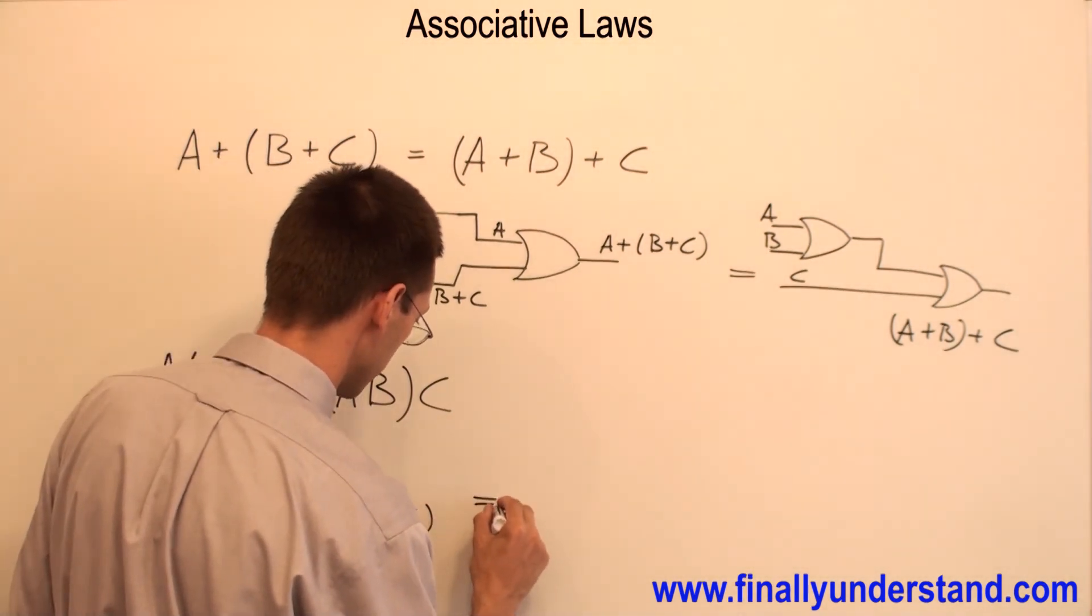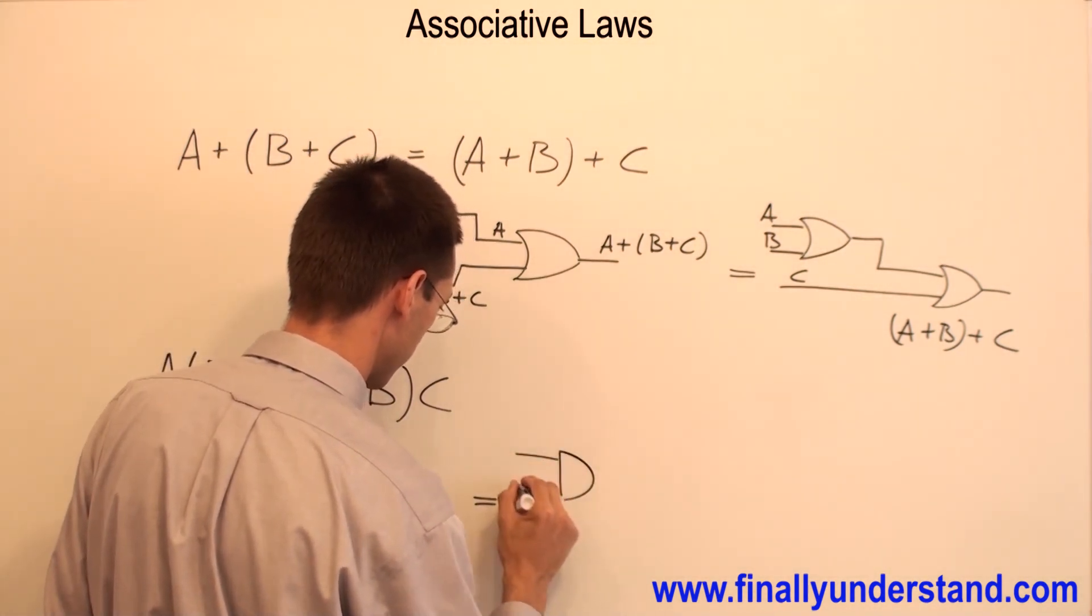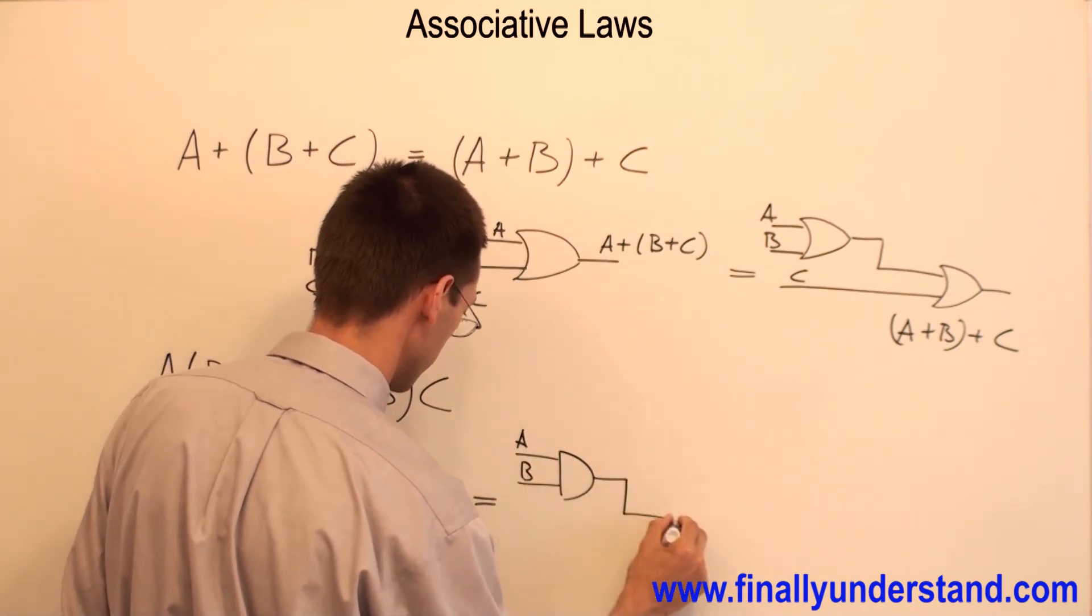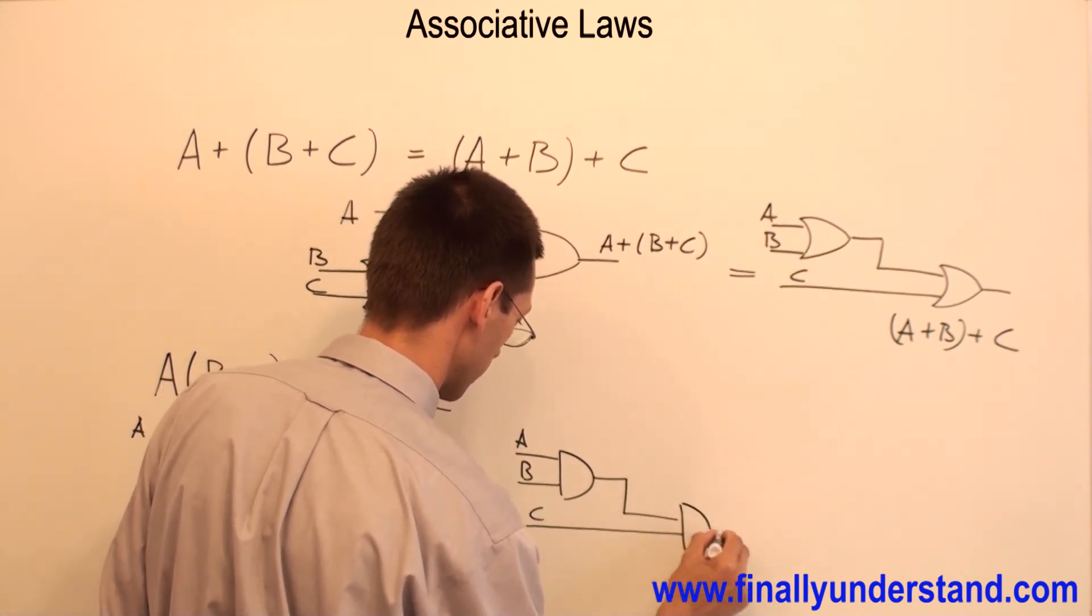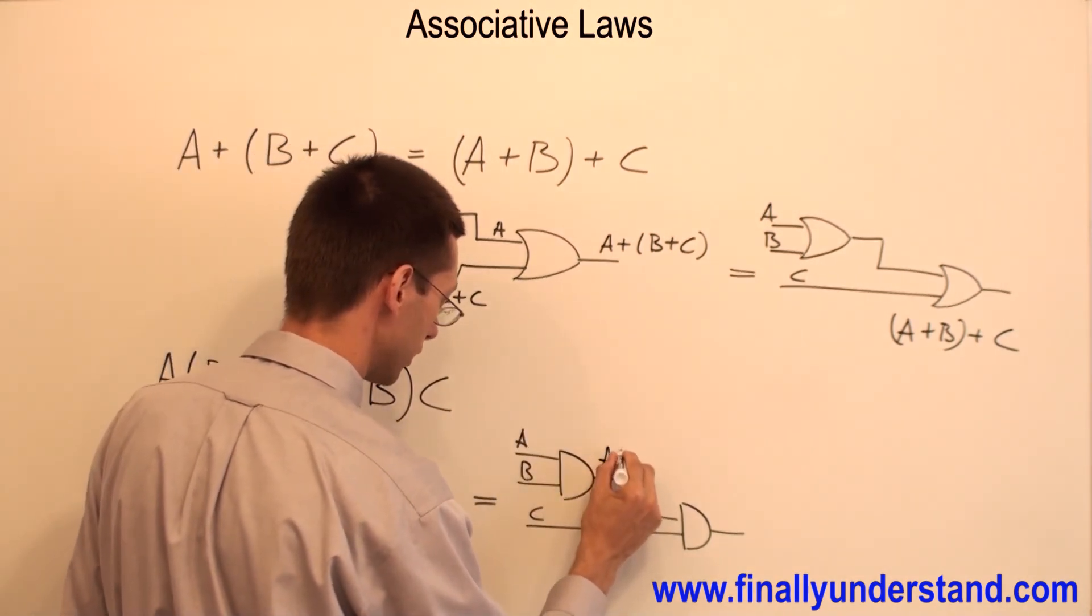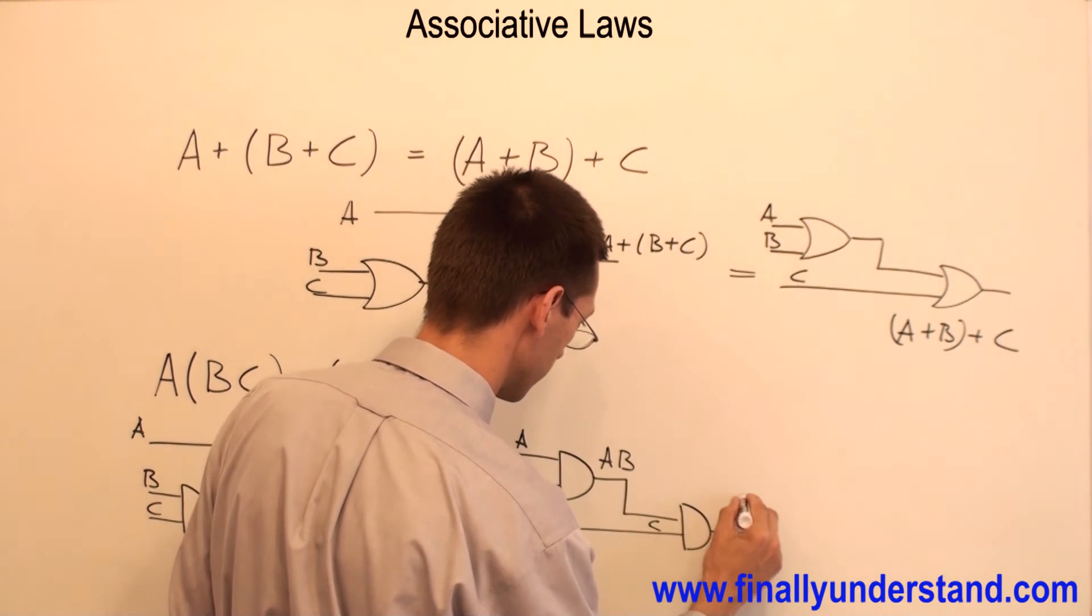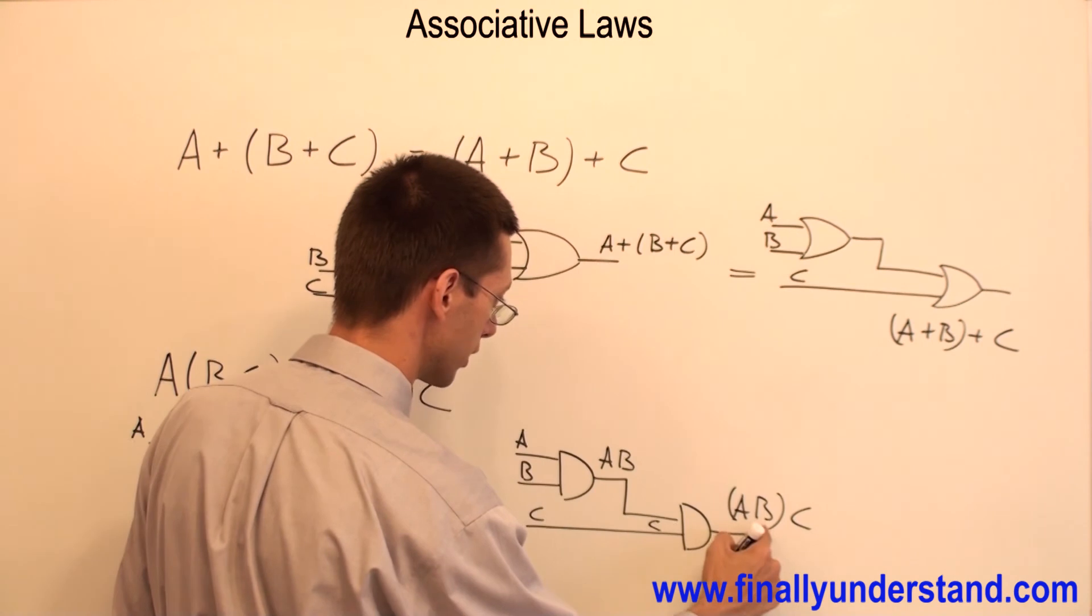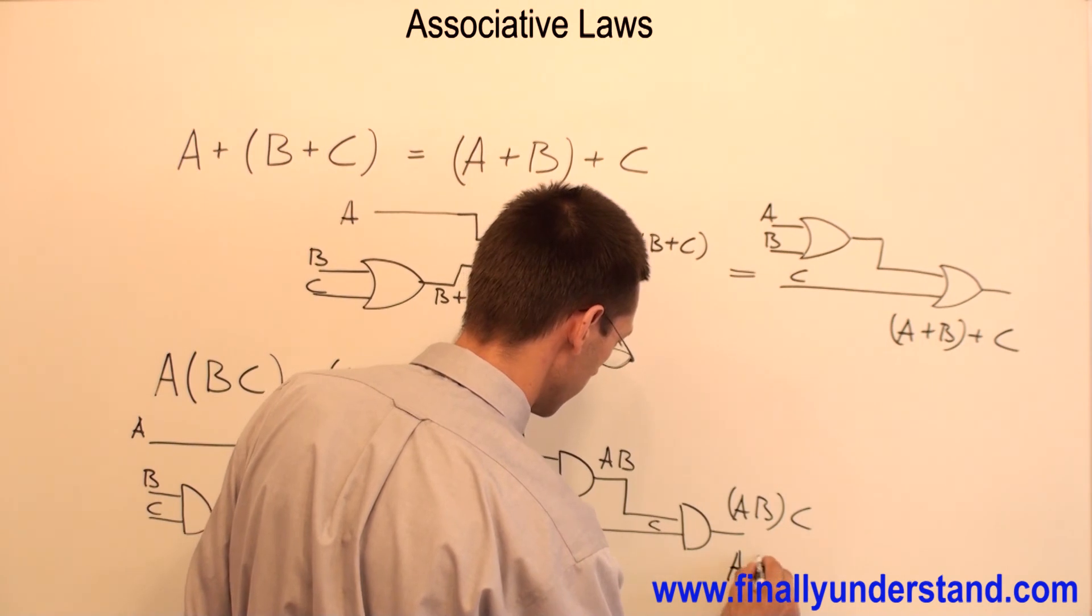Now, the law says this is equivalent to A OR B, and this is ANDed with C. And again, let's take a look at what I'm going to have on the output. I have A AND B AND C. And because this is the multiplication, this is AND, I simply write this is equivalent to A AND B AND C.